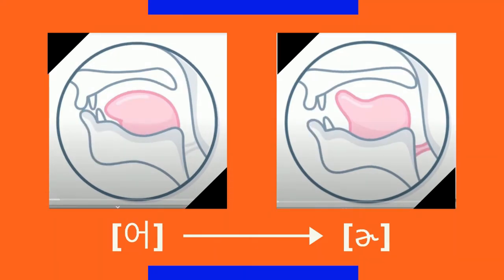If that doesn't convince you, pronounce Korean words like '한국어' or '영어,' and then stay in that final position. Don't move anything — just stay in that exact mouth position. Then curl the tongue up to pronounce 'er' as in 'earn' or 'urge.' Notice where your tongue is, and simply put the raised tip down and relax it. And there you have the Korean ㅓ.